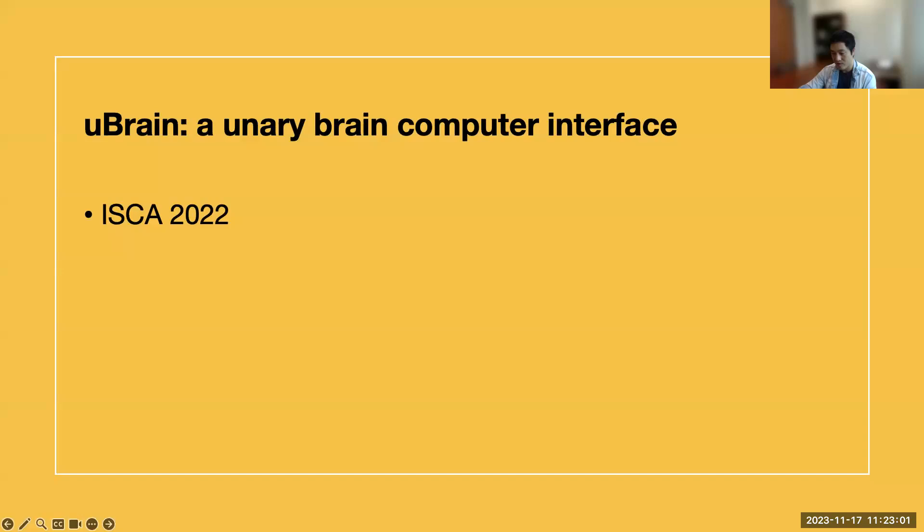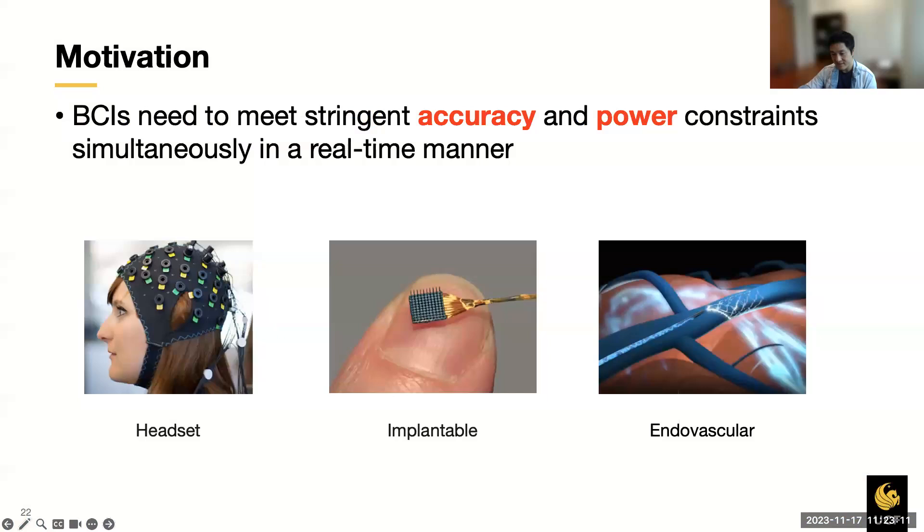Now I will move on to the next topic, which is UBrain as an example of how to use unary computing to build efficient brain-computer interface. Brain-computer interfaces are tiny but mighty systems that collect, communicate, and manipulate brain signals, which have varying signal modalities depending on where the electrodes are placed. The diverse functionalities pose very stringent constraints on the task accuracy and power consumption. For example, for seizure prediction, no one wants even one misprediction. For implantable BCIs, the power cannot exceed 50 milliwatts. To support diverse BCI tasks while keeping the brain safe, BCIs have stringent accuracy and power constraints simultaneously.